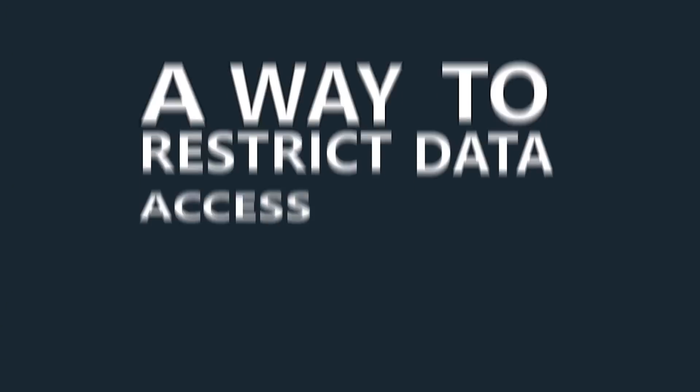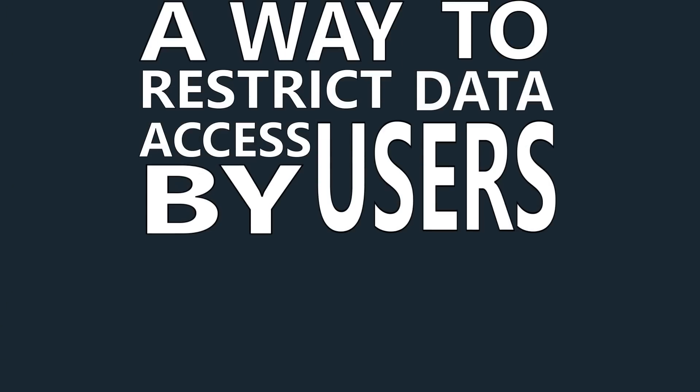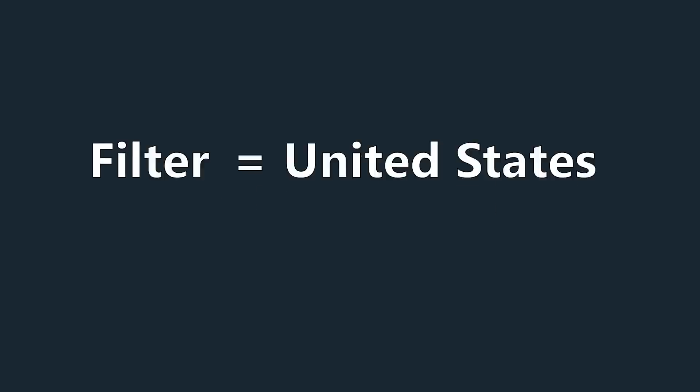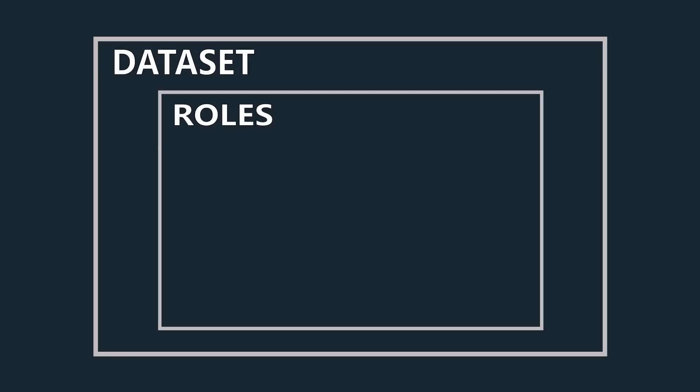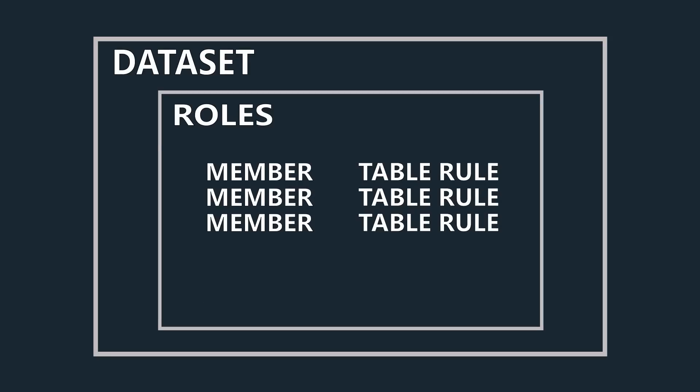So what is row-level security? Row-level security is just a way to restrict data access by users. This is done by using filters at the row level, and you can create those filters based on rules in a given data set. Let's look at an example of this.